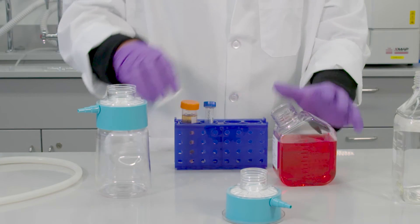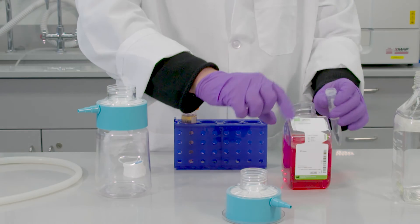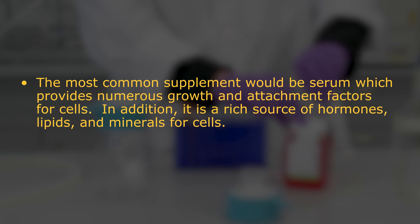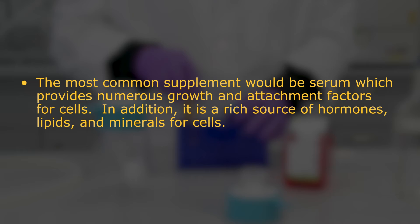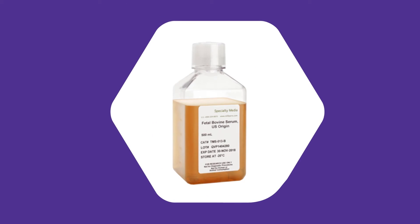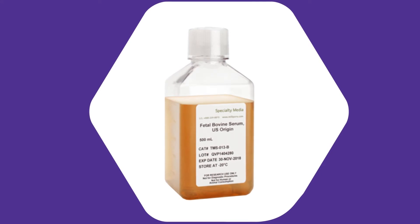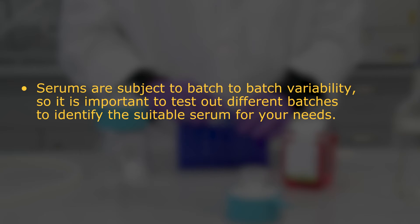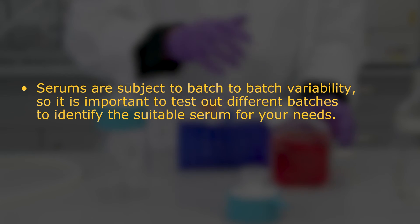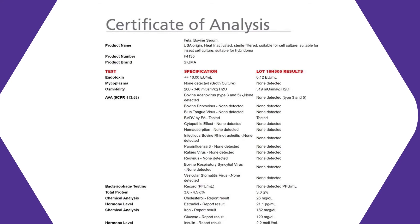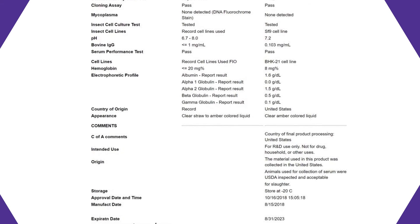Now let's cover so-called supplements. These would be any additives added to the media to supplement and meet specific culturing needs. The most common supplement would be serum, which provides numerous growth and attachment factors for cells. In addition, it is a rich source of hormones, lipids, and minerals for cells. Most commonly used form of serum is fetal bovine serum (FBS), while other types of serum available are newborn calf serum and horse serum. Serums are subject to batch-to-batch variability, so it is important to test different batches to identify the suitable serum for your needs. Please also make sure to obtain serum from reputable and well-established vendors, who will supply you with a certificate of analysis covering an extensive list of quality measurements.